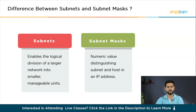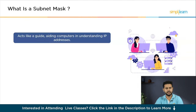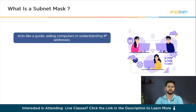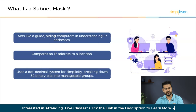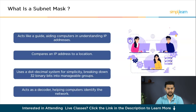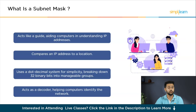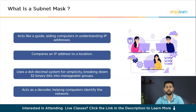A subnet mask is like a guide that helps computers understand the different parts of an IP address. Picture an IP address as a location where the network is the street name and the host is the house number. For example, consider the IP address 192.168.123.132. The first three sets — 192.168.123 — show the network, while the last set specifies a particular device on that network. We use a dot-decimal system, breaking down the 32 binary bits — four sets of 8 bits — into more manageable groups. The subnet mask acts as a decoder, helping computers figure out which part of the IP address is the network and which part identifies the specific device.